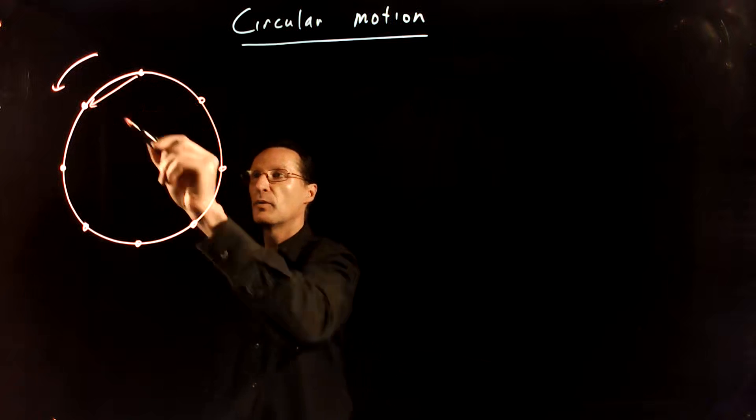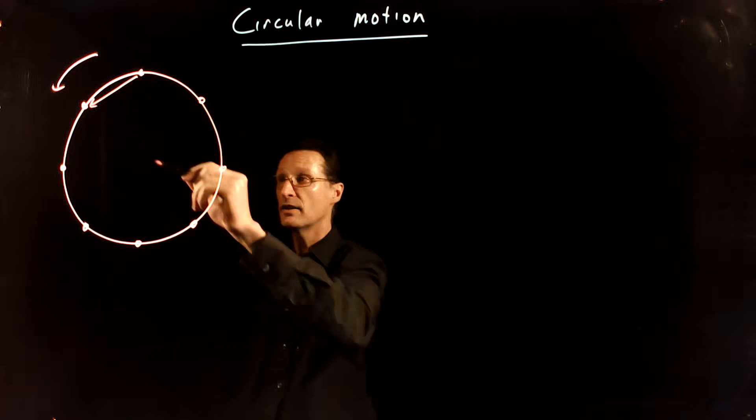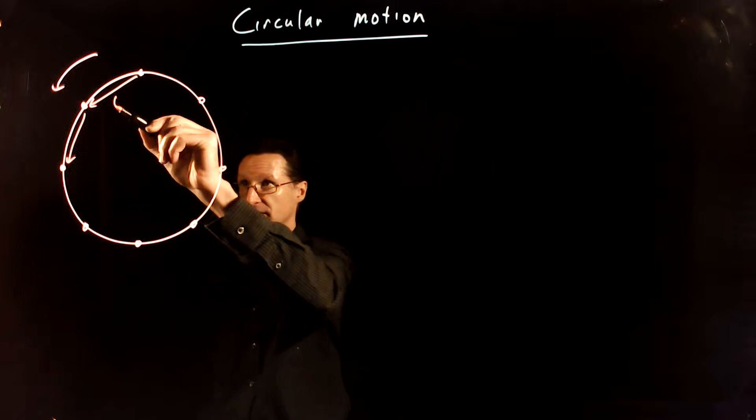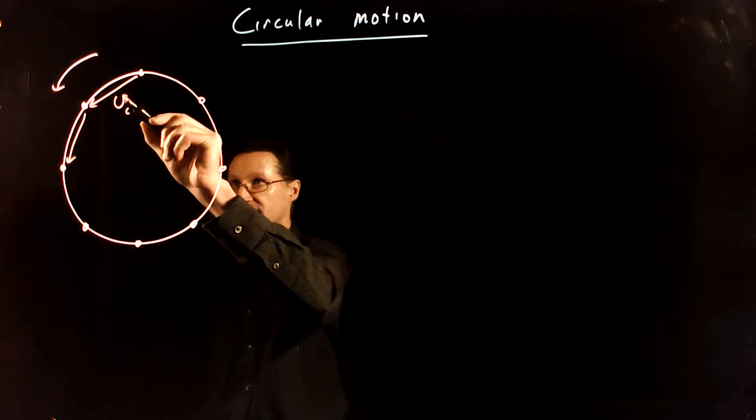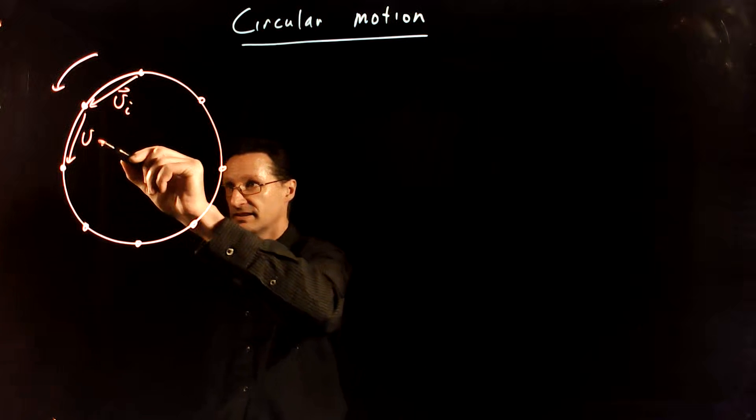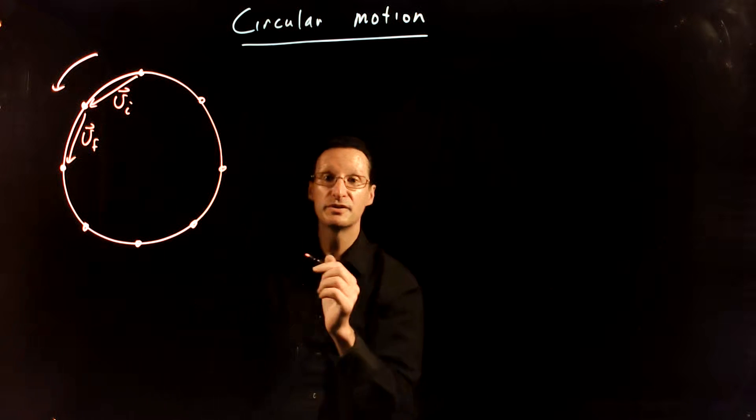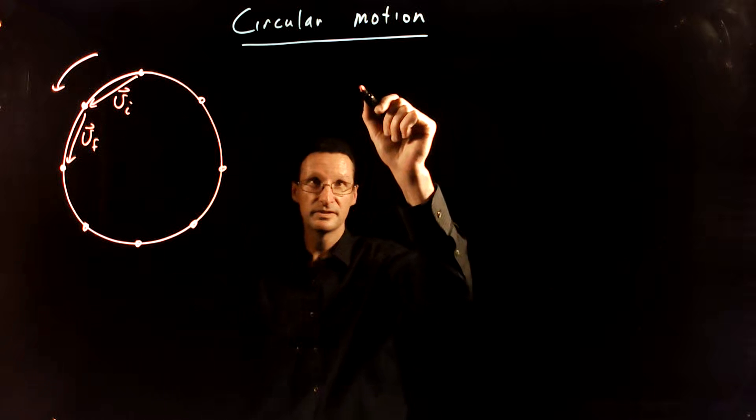And the velocity vector then points between those two points because it follows the displacement. So let's say this is the initial velocity and this is the final velocity. And we want to think about the change in velocity from those two segments.